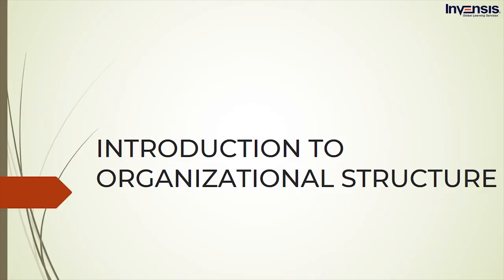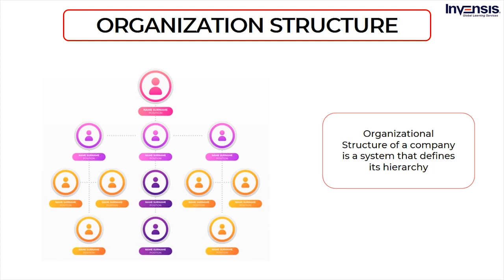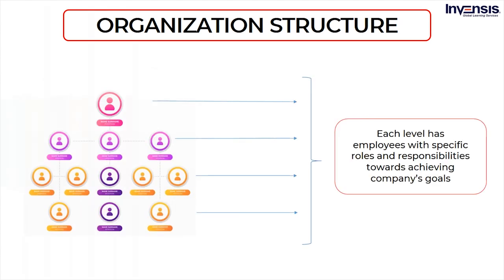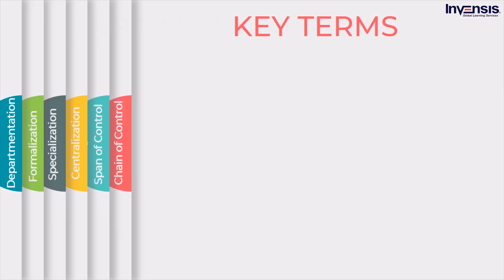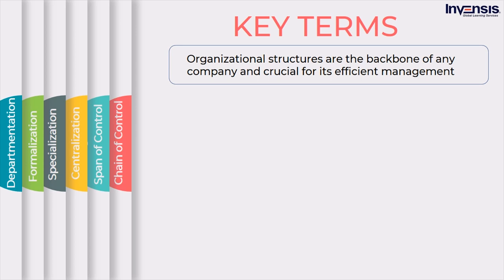The first aspect to be understood before going into IT governance is to know how an organization works. Here, we will have an introduction to organizational structure. Organizational structure of a company is a system that defines its hierarchy. Businesses need a strong structure to attract and retain talented employees, as well as create a workable organizational hierarchy. Choosing the right organizational structure is important because poor organizational structure leads to confusion among employees, poor decision-making among managers, and ultimately less-than-ideal results for a business. Each level has employees with specific roles and responsibilities towards achieving company's goals. Organizational structure defines the way in which the roles and responsibilities, power, authority are assigned and governed, and denotes how information flows between the different levels of hierarchy in an organization. Organizational structures are the backbone of any company and crucial for its efficient management.